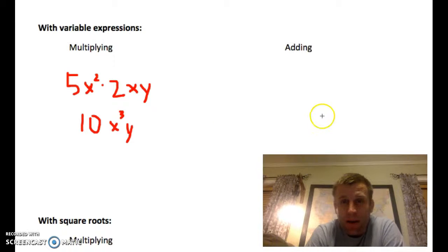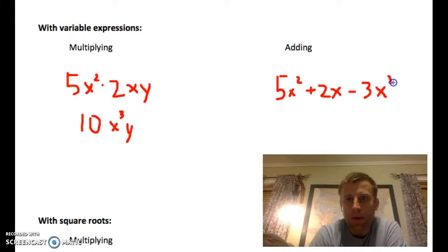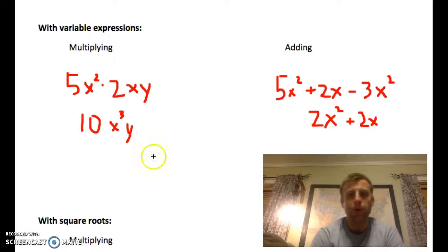Remember, with adding, they actually have to be alike. So, if you have five-x squared plus two-x minus three-x squared. You can't put those all together. You can only put together your like terms, which are the x squareds. So, you'd wind up with putting those together. Two-x squared plus two-x.